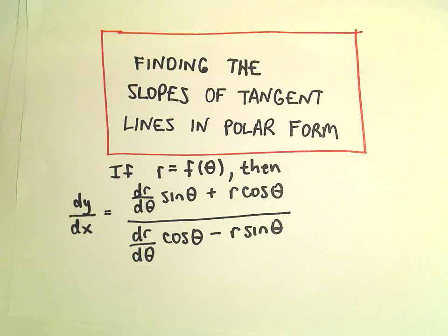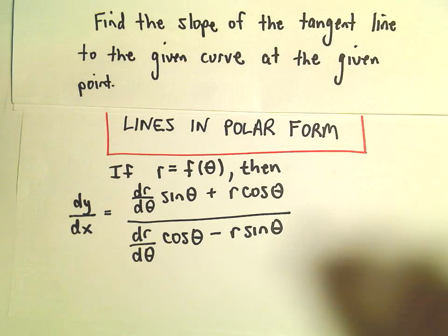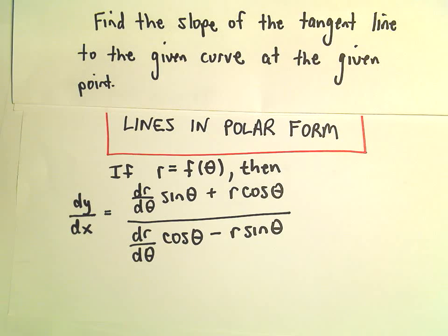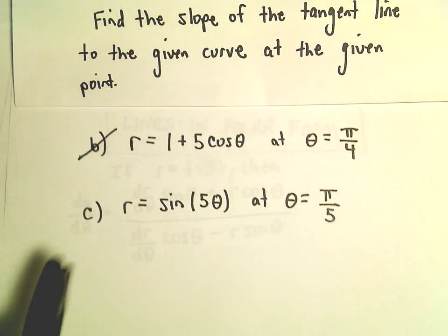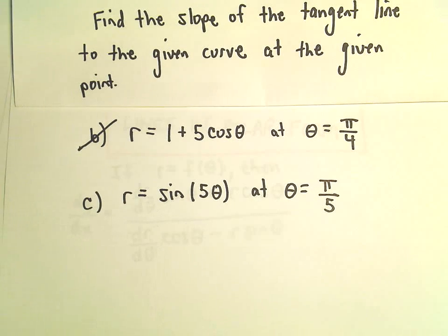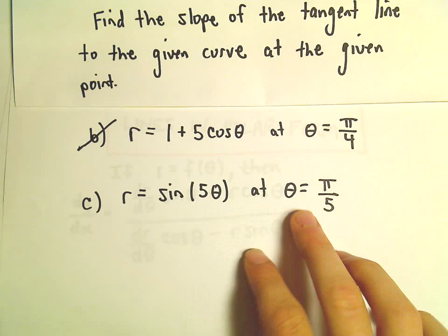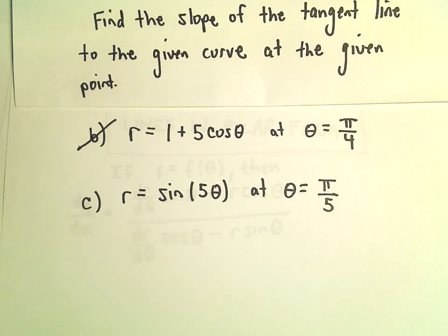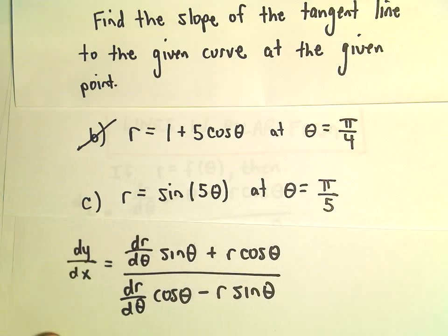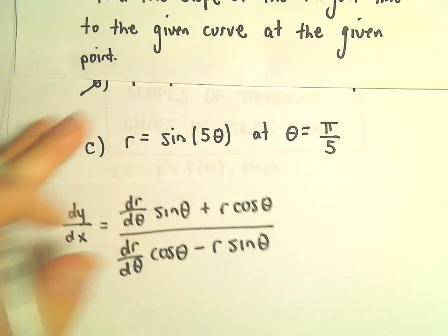Alright, so one more example here — finding the slope of a tangent line in polar form. So our last example, part c: we're going to find the slope of the tangent line to r equals sine of 5θ at θ equals π over 5. There's our formula that we're going to fill in.